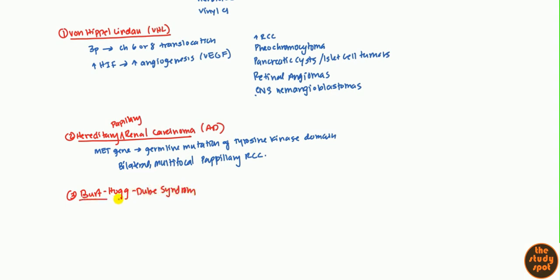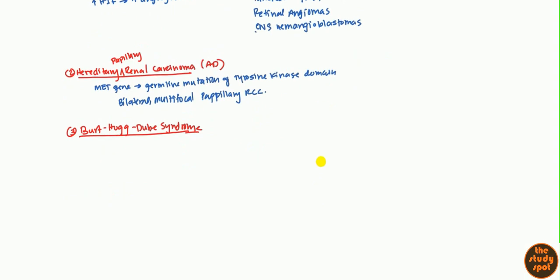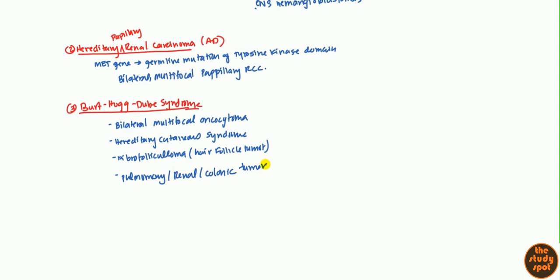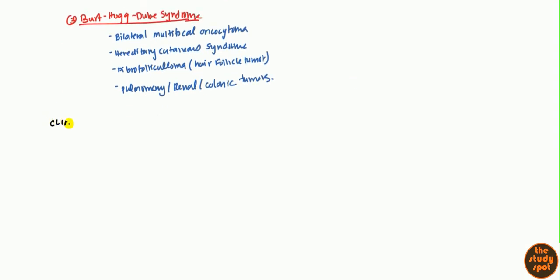Birt-Hogg-Dube syndrome is another one that causes bilateral multifocal, but instead of papillary renal cell carcinoma, it causes oncocytoma which is not as bad and rarely metastasizes. It can also cause hereditary cutaneous syndrome and interestingly enough it can cause tumors of the hair, also known as fibrofolliculoma. On top of all this, it can affect the pulmonary system leading to pneumothorax, renal tumors, and even colonic tumors. Very diverse set of symptoms in that category.